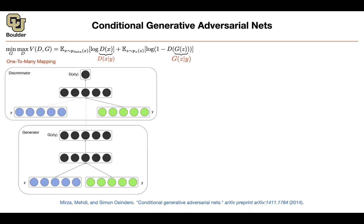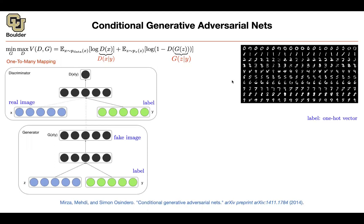This will be more clear if I show you an example. Let's say you want to generate samples that look like zero all the time, or samples that look like one, two, three, et cetera. The label is going to be a one-hot vector — it's going to be one at the particular location you're interested in. If you're interested in number zero, location one in your vector is going to be one. If you're interested in number seven, location eight is going to be one and the rest are going to be zero.